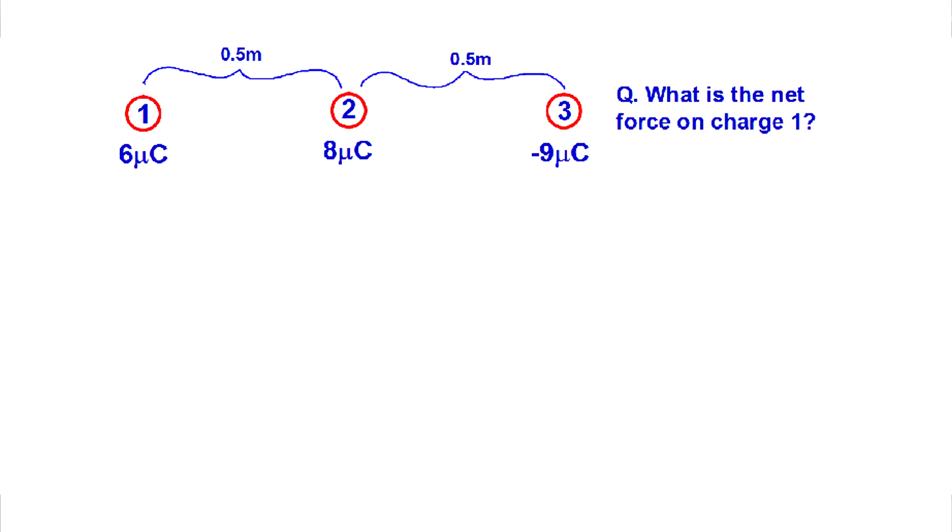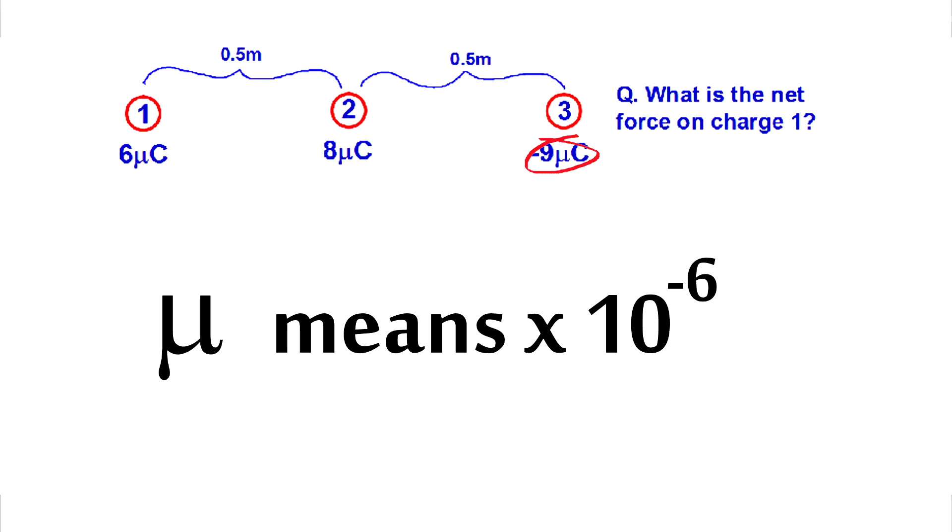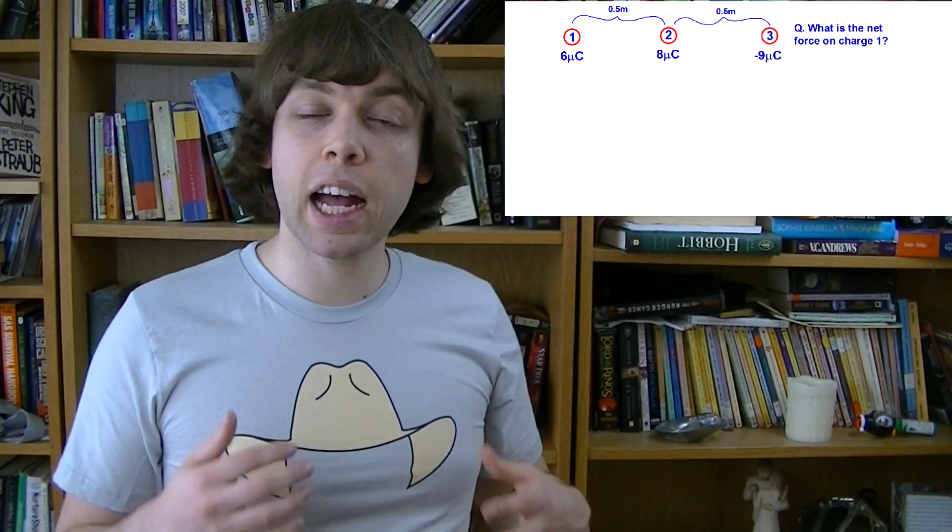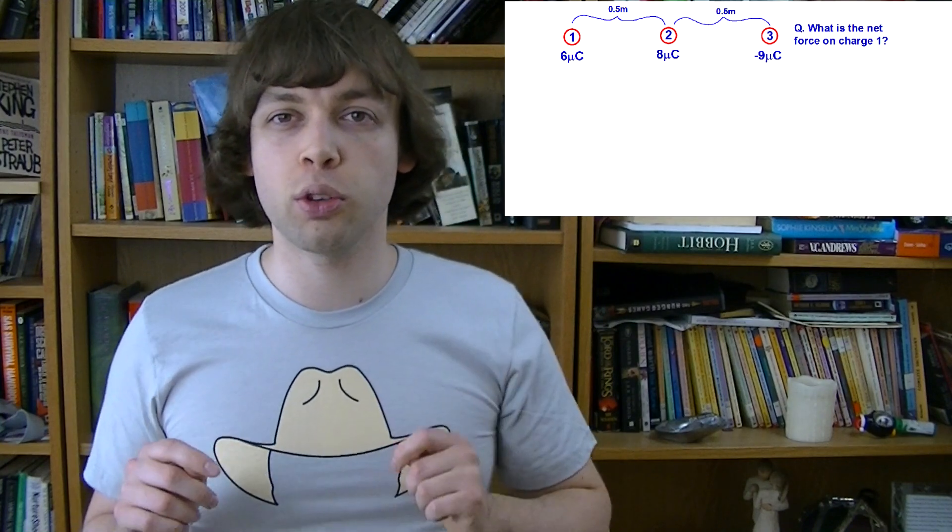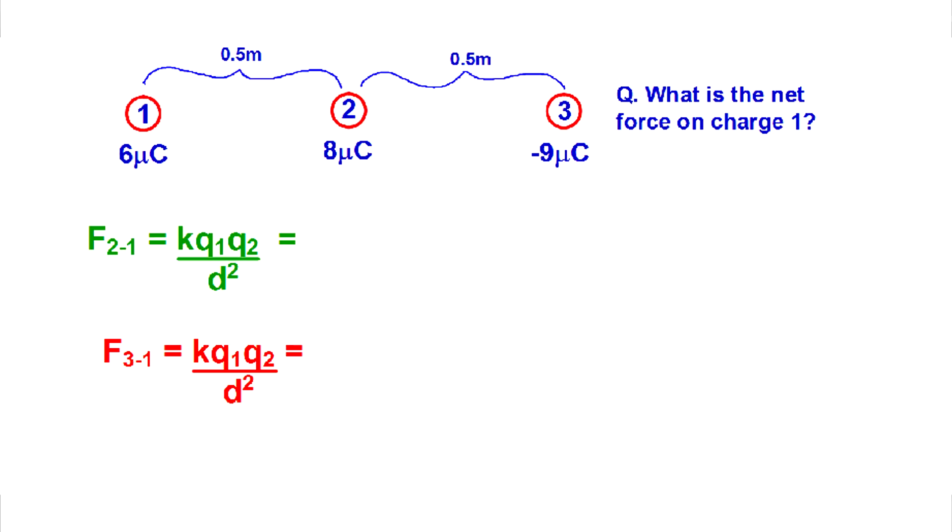But things get harder when you start adding multiple charges. Here for example, we have three charges in a line. Note that this symbol is micro. It means times 10 to the negative 6. So 3 micro coulombs will be 3 times 10 to the negative 6 coulombs. If we wanted to figure out how much force charge 1 feels due to the other two charges, charge 2 and 3, we would have to do a separate equation for each.